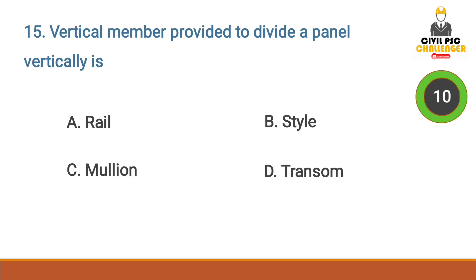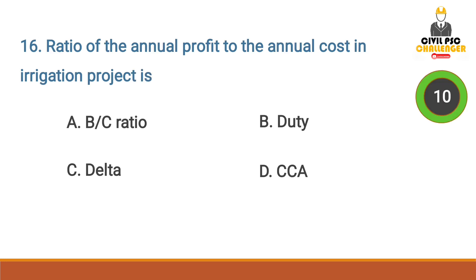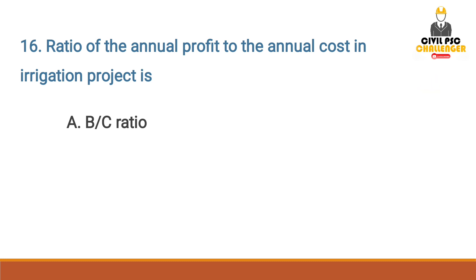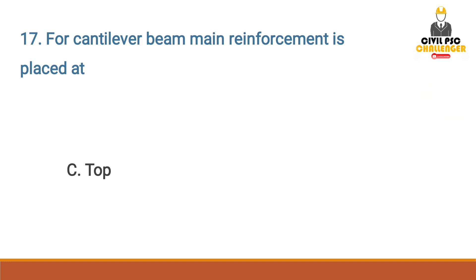The vertical member provided to divide a panel vertically is — Answer option C: Mullion. The ratio of the annual profit to the annual level cost in an irrigation project is — Answer option A: B/C ratio. For a cantilever beam, main reinforcement is placed at the top.